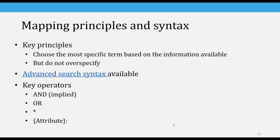A couple of slides on mapping principles and search syntax. The two key principles to keep in mind when choosing the correct LOINC term: first, choose the most specific term based on the information that's available, but don't over-specify. For example, if your test is a 24-hour urine sodium mass concentration, you should choose the term for 24-hour urine and not just the point-in-time term. However, if you don't know whether it's a 24-hour urine or not, you don't want to choose the more specific code because you really have no idea if that's what's being tested.